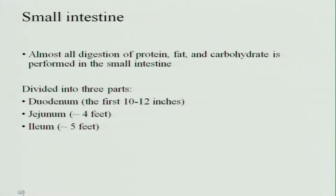After the stomach, the food goes into the small intestine. The digestion of proteins, fat, and carbohydrates is performed in the small intestine. The small intestine is divided into three parts: the duodenum, which is the first 10 to 12 inches, then the jejunum which is 4 feet in length, followed by the ileum which is 5 feet in length.